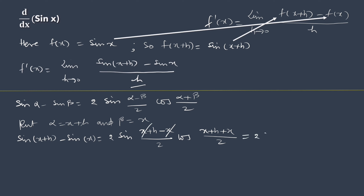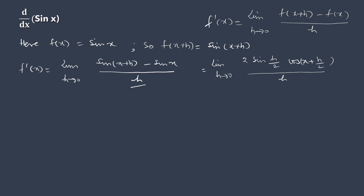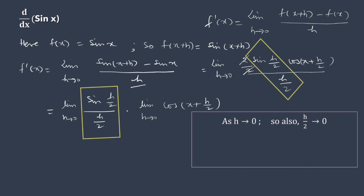Simplifying. Now substituting this equivalent value in the formula. Since sine has angle h by 2, to have h by 2 in the denominator also, we can divide both the numerator and denominator by 2. As we know, the limit of a product of functions is equal to the product of their individual limits. Thus, we can rearrange the limit as shown and compute it in parts. When h goes to 0, h over 2 also goes to 0. So we can use: limit x goes to 0, sine x over x equals 1.